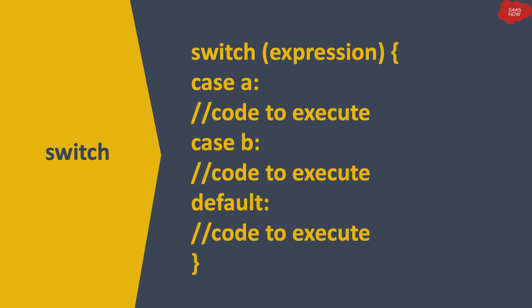Apart from if and else, we also have the switch statement, which is used for conditions in JavaScript. The syntax of switch is: start with the switch keyword, then put the expression in brackets, then put opening and closing curly brackets in which you write different possible cases for the value of the expression. You start with the case keyword, each expected value, then a colon, then the code to execute. After every case, you have to write the break keyword. Break is used so that if you do not want to execute further lines of code, execution stops after the matched case.